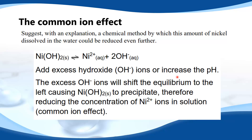Increasing the pH would increase the concentration of hydroxide ions. The excess hydroxide ions will shift the equilibrium to the left, causing nickel hydroxide to precipitate, therefore reducing the concentration of the Ni²⁺ ions in solution. And that is again known as the common ion effect.